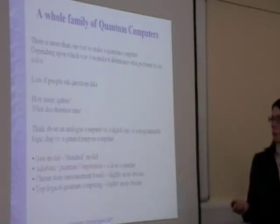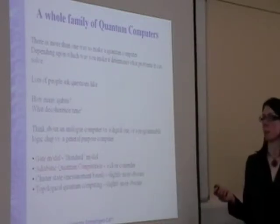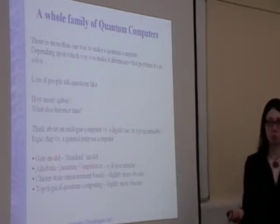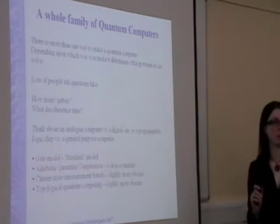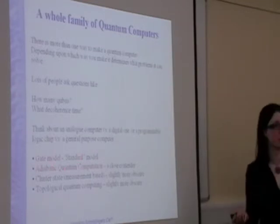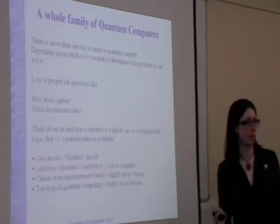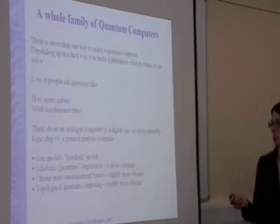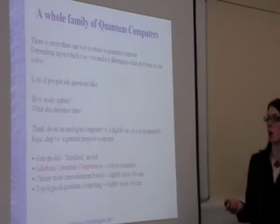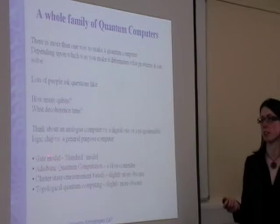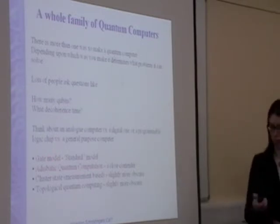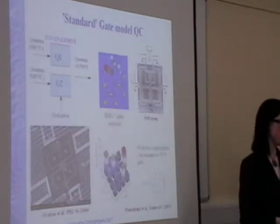In the same way as you have with classical computing, you also have different models within quantum computing. There are two that I'm going to talk about. The first one is called the gate model, which is the standard model most people think of when they hear quantum computing. There's also another model called adiabatic quantum computing, which is actually doing better than the gate model in terms of what people are trying to make at the moment.